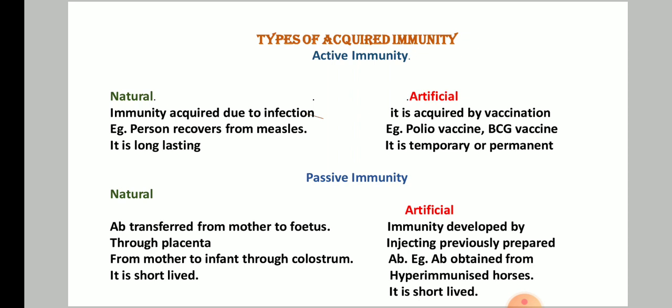Natural active immunity occurs when you suffer from any kind of disease and recover. Your body develops immunity and produces antibodies against that particular infection — this is natural active acquired immunity. It is long-lasting because your body memorizes it. For example, if a person suffers from measles, antibodies develop inside the body, fight the antigens, the person recovers, and the body retains and memorizes those antibodies.